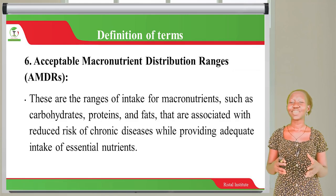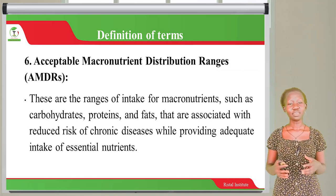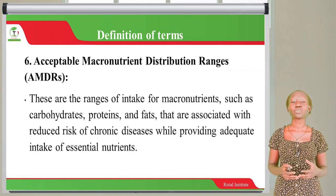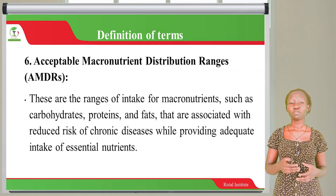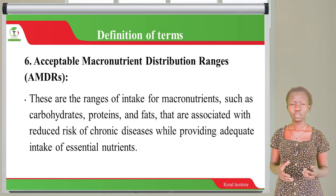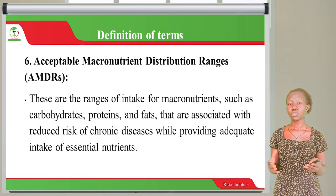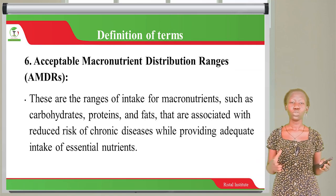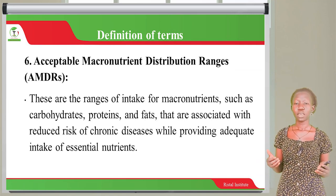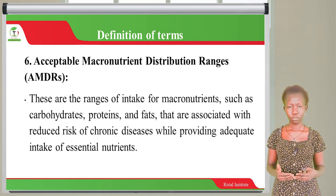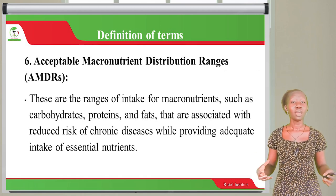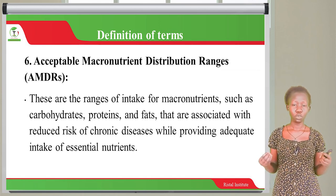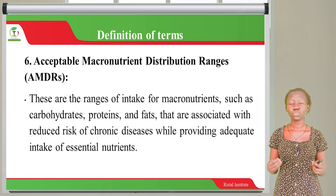Acceptable Macronutrient Distribution Ranges are the ranges of intake for macronutrients — carbohydrates, proteins and fats — that are associated with reduced risk of chronic diseases while providing adequate intake of essential nutrients. It is always recommended to stay within the acceptable ranges so that you are able to maintain good health, reduce the risk of chronic diseases and give yourself all the essential nutrients you need.